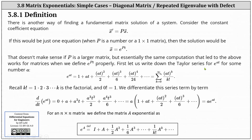Let us first write down the Taylor series for e to the power of at for some number a. You may recall this series from calc two. Recall that k factorial is equal to one times two times three, all the way out to times k, and zero factorial is equal to one. If we differentiate the series term by term, we get the result below. Notice if we factor out a, we do have a times e to the power of at.